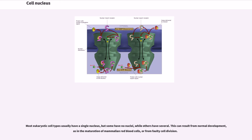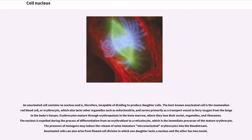Most eukaryotic cell types usually have a single nucleus, but some have no nuclei, while others have several. This can result from normal development, as in the maturation of mammalian red blood cells, or from faulty cell division. An enucleated cell contains no nucleus and is, therefore, incapable of dividing to produce daughter cells. The best known enucleated cell is the mammalian red blood cell, or erythrocyte, which also lacks other organelles such as mitochondria, and serves primarily as a transport vessel to ferry oxygen from the lungs to the body's tissues. Erythrocytes mature through erythropoiesis in the bone marrow, where they lose their nuclei, organelles, and ribosomes. The nucleus is expelled during the process of differentiation from an erythroblast to a reticulocyte, which is the immediate precursor of the mature erythrocyte. The presence of mutagens may induce the release of some immature micronucleated erythrocytes into the bloodstream. Enucleated cells can also arise from flawed cell division in which one daughter lacks a nucleus and the other has two nuclei.